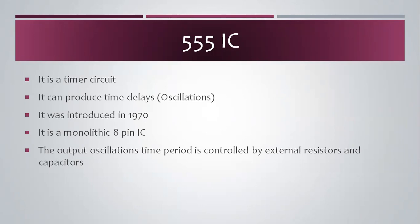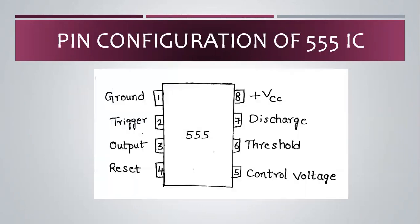So, what are the 8 pins? Let us go to the pin configuration of the 555 IC. It is the pin configuration. The 555 IC has 8 pins. The first pin name is ground, and the second pin is trigger. The third pin is output, and the fourth pin is reset.